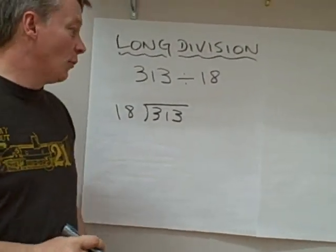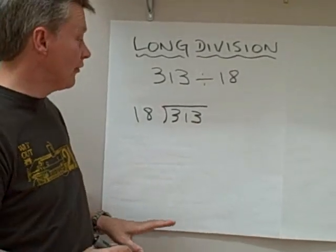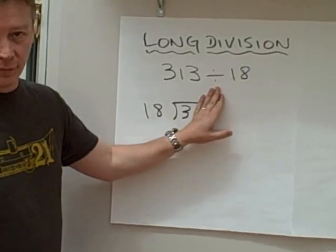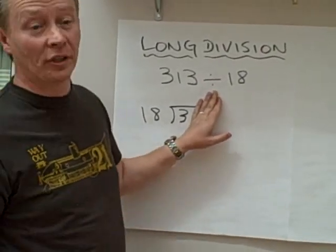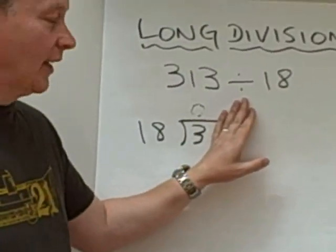Okay, now once again, I know that these are hundreds, tens and units. And I'm just going to ask myself the first question, how many times does 18 go into the number 3? Well, none at all. So if you like, there's a nothing there. I'll just draw that very faintly.